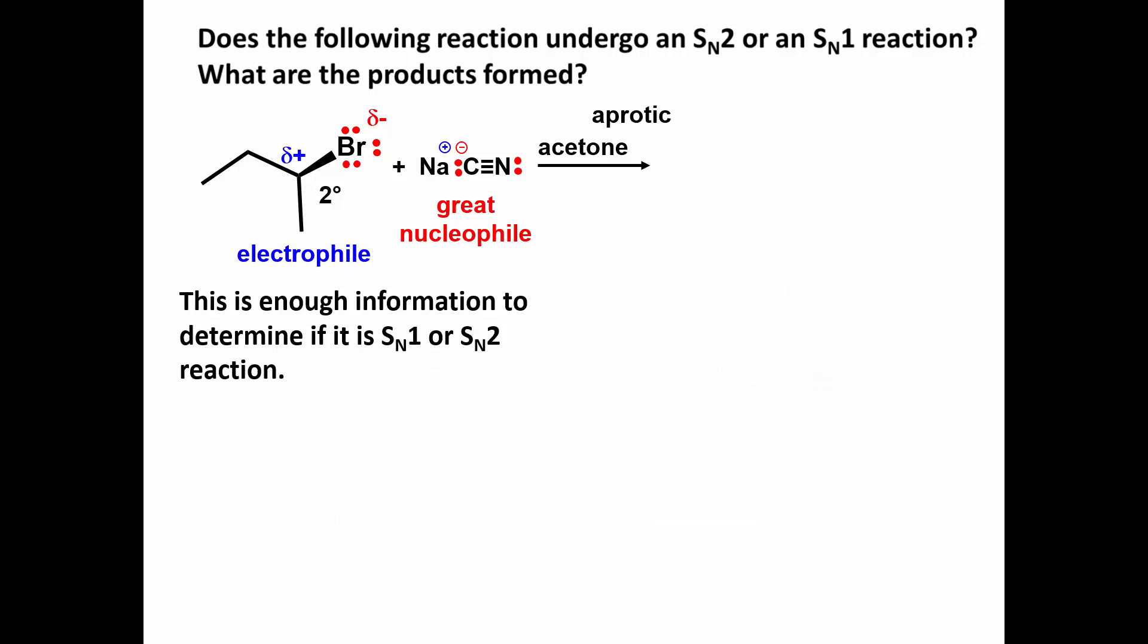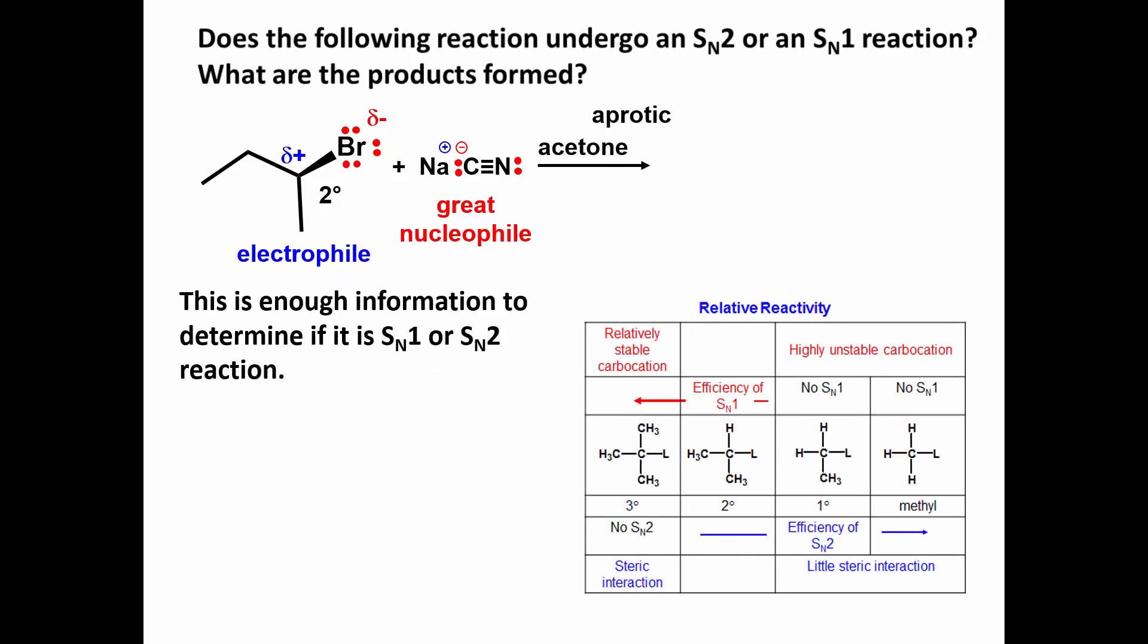This is enough information to determine the mechanism. The aprotic solvent does not promote SN1. The alkyl halide is secondary and with a great nucleophile like cyanide, this undergoes an SN2 reaction.